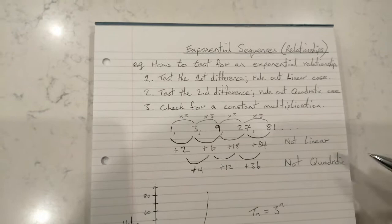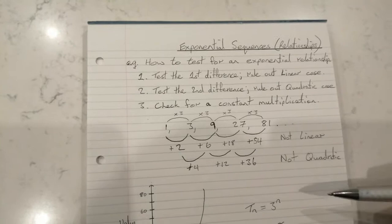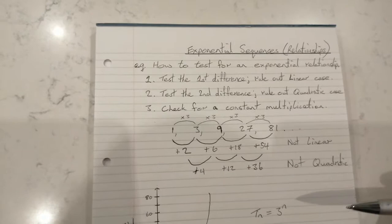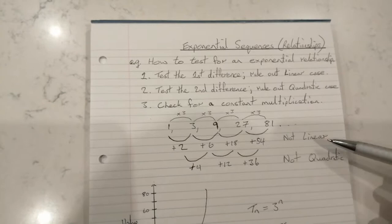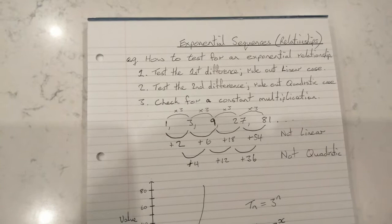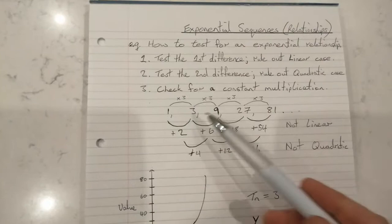When you see a situation like this where you're multiplying by the same thing each time to get to the next term in the sequence, then you know that it is exponential. Now, of course you could have done that from the very beginning, but the reason I said to do these things first is that the most common types of relationships you'll be coming across will be linear, so it's good to test for that first. The second most common is quadratic, and more rarely will you actually be coming across an exponential sequence.